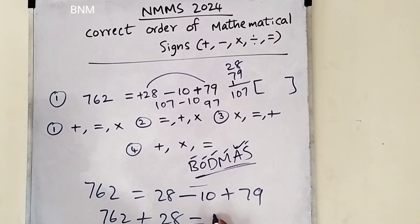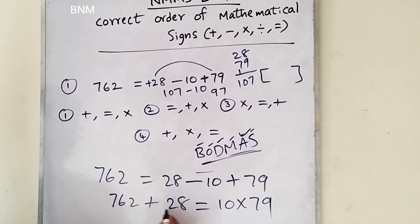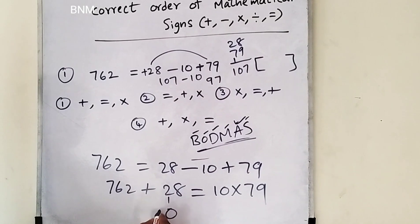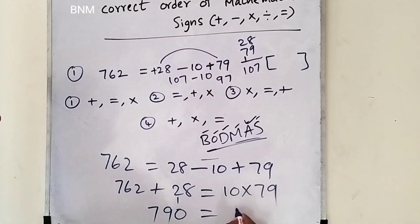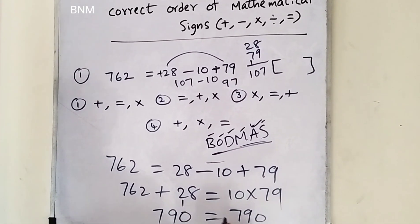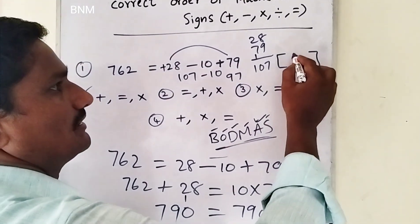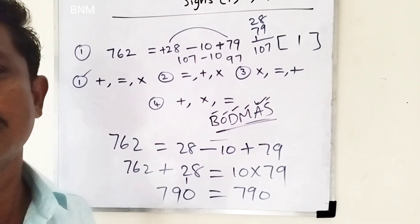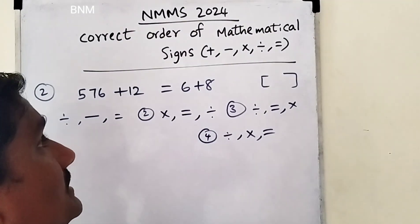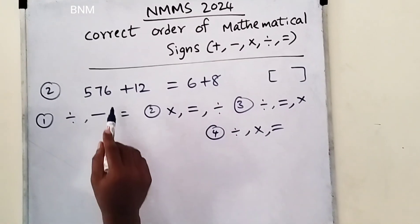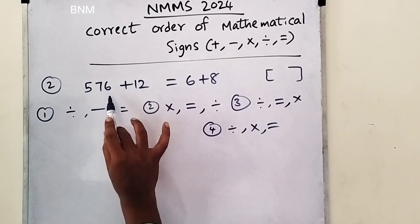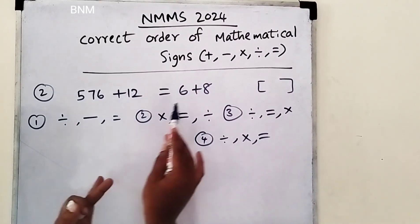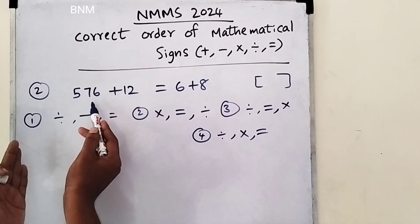10 into 79. If you add 8 plus 2 is 10, 6 to 8 is 19. So 79 is 790. I have to give you the first answer. Next, second bit: Correct order. Here we have 576 plus 12 equal to 6 plus 8. Left hand side and right hand side — this is 14 and this is 588.